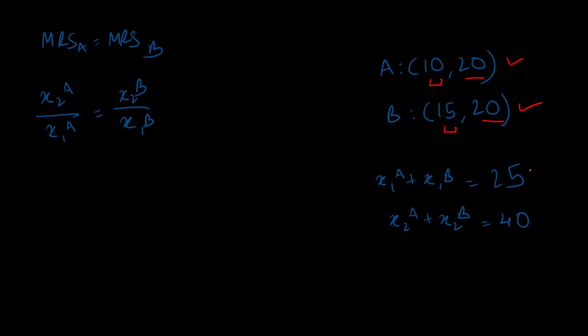Now we can just take these two equations and plug them into our condition for MRSa equals MRSb. So that will give us x2a divided by x1a equals 40 minus x2a divided by 25 minus x1a. All I have done is substituted the value of x2b and x1b from over here.